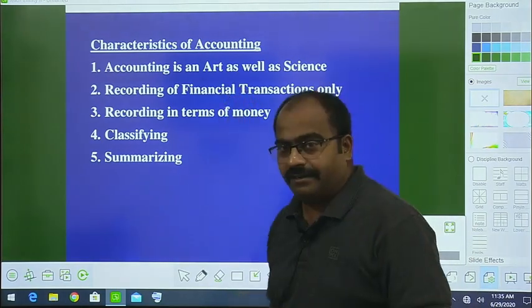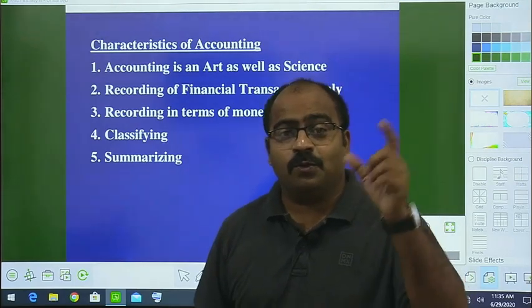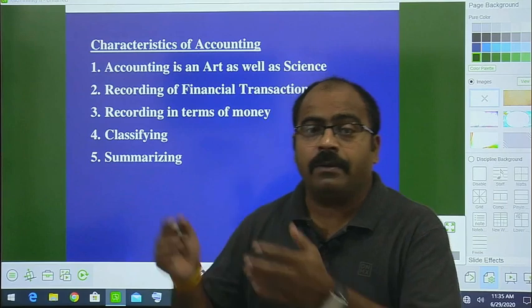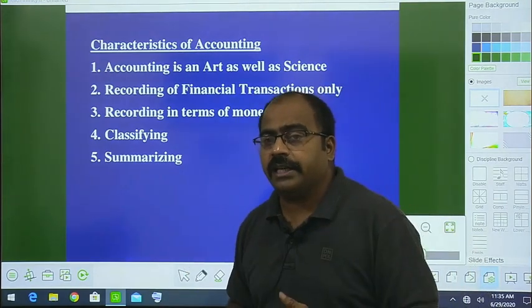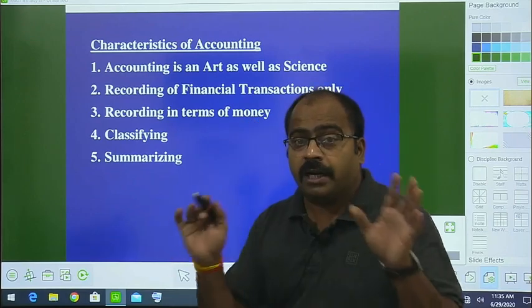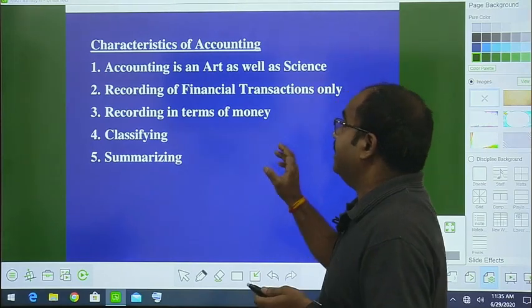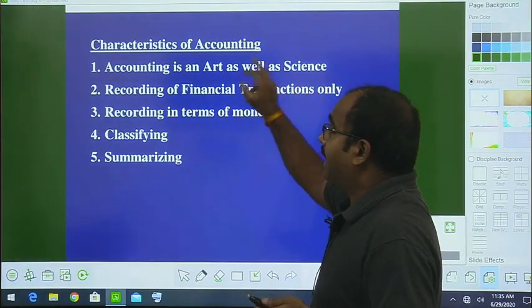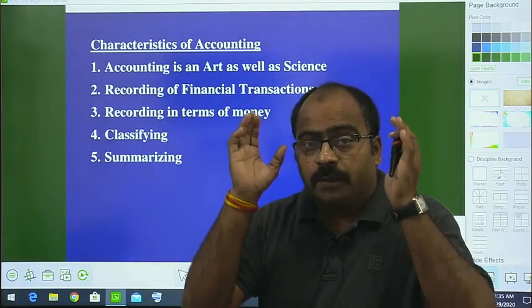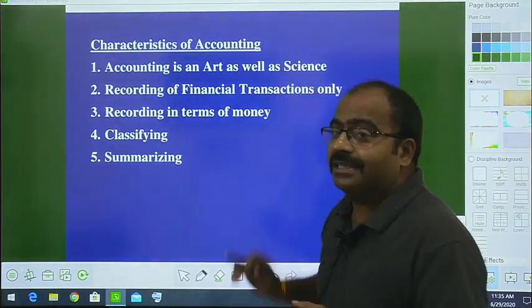In accounting, when we record, we follow a system — that is the art. And science means we have rules, regulations, concepts, and conventions. In accounting we have accounting concepts, principles, and conventions. So it is necessary to have the art of recording as well as using the rules, regulations, and all the principles as a science.